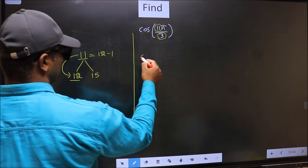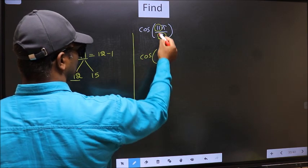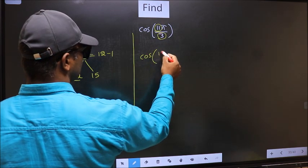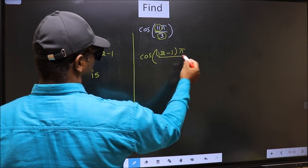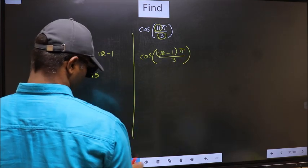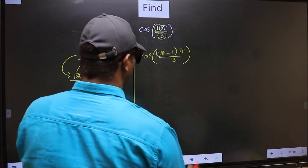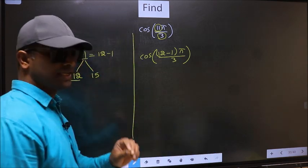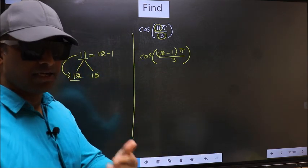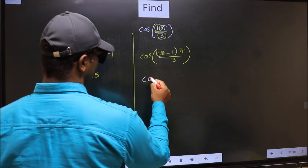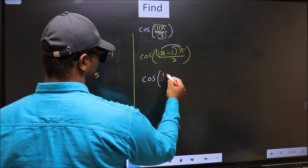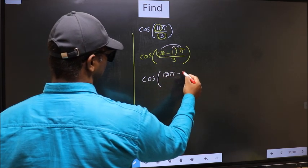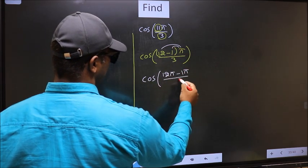So this will become cos. In place of 11, now you should write 12 minus 1 pi. Now you should open up the brackets. You get 12 pi minus 1 pi by 3.